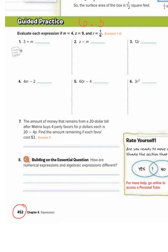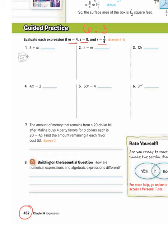So for number 1, this says evaluate each expression if m equals 4, z equals 9, and r is 1/6. So number 1 is 3 plus m. So if m is equal to 4, then we can replace m with a 4. So we do 3 plus 4, which equals 7.